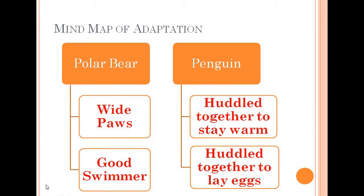This slide shows a mind map of some of the animals that display adaptations in extremely cold climates. The polar bear has characteristic features such as white paws and is a good swimmer. The penguin huddles together to stay warm and also to lay eggs. The mind map gives a concrete visualization of adaptations of animals living in cold climates.